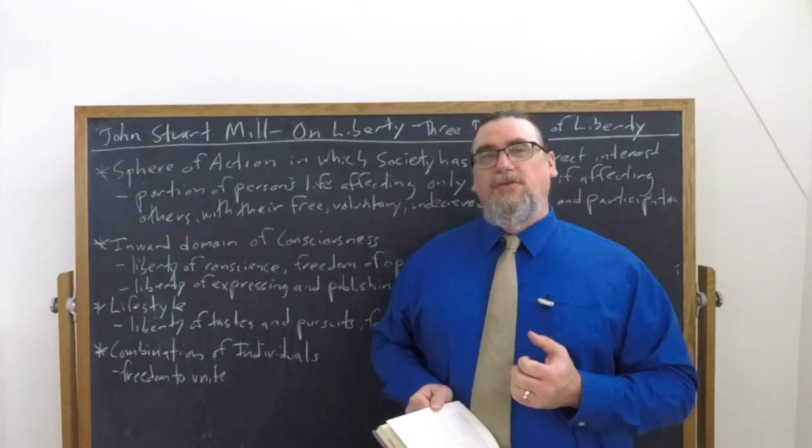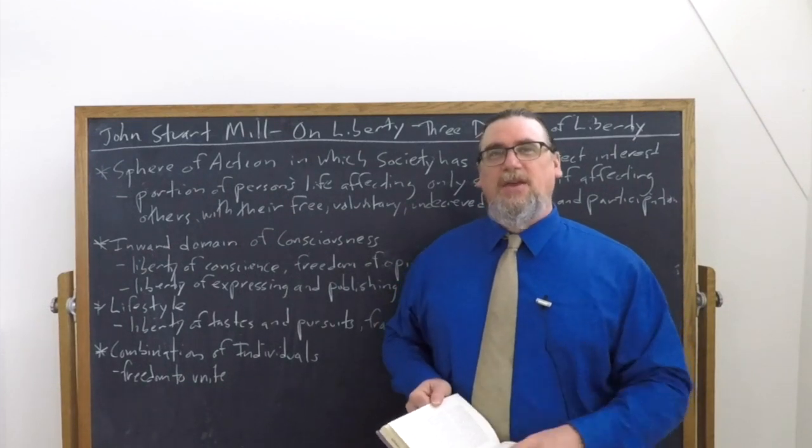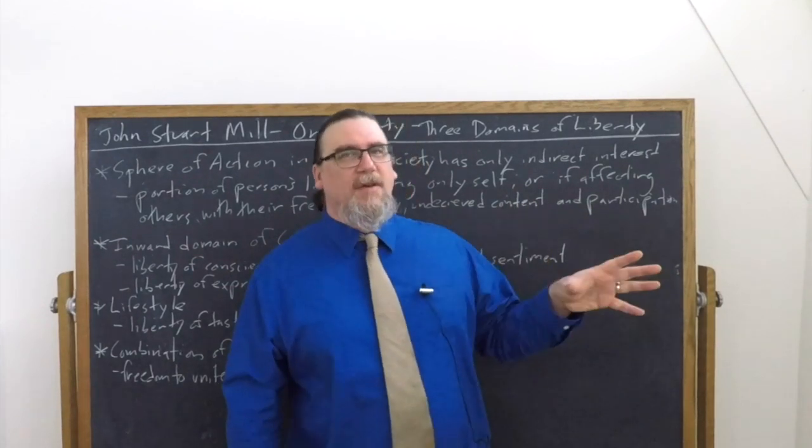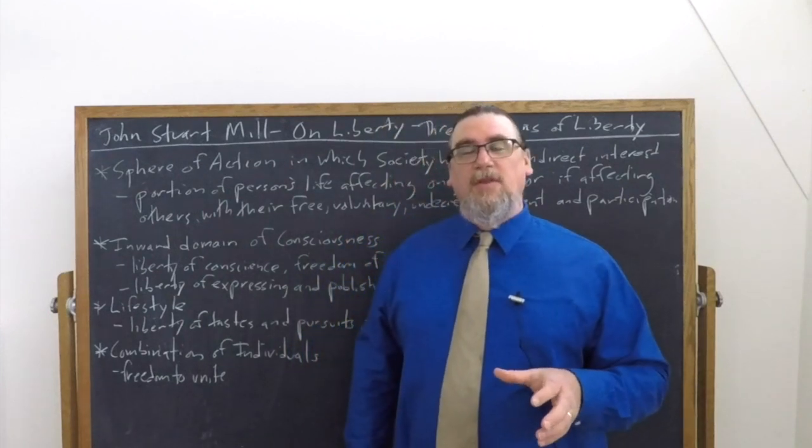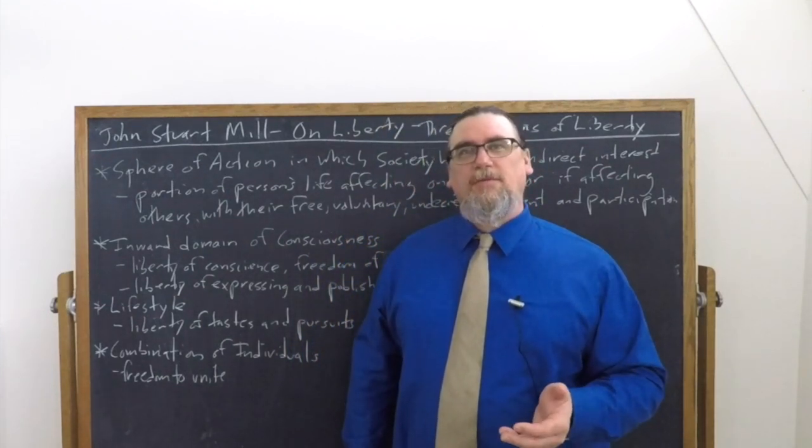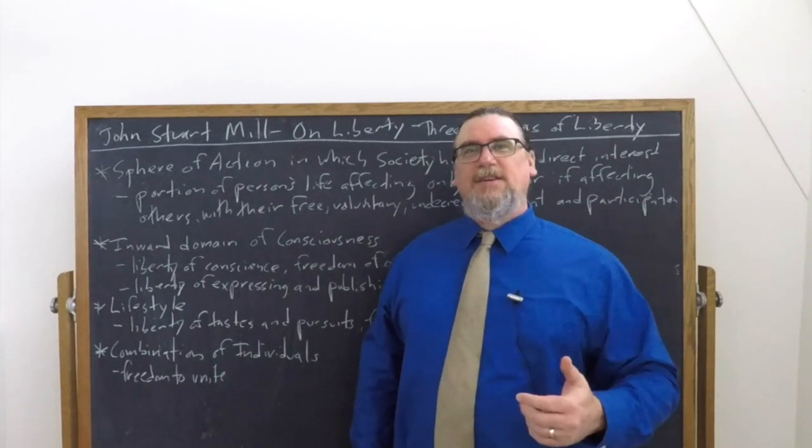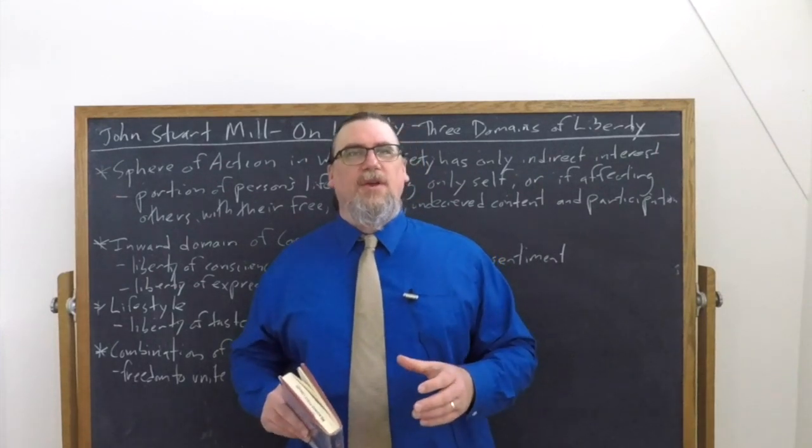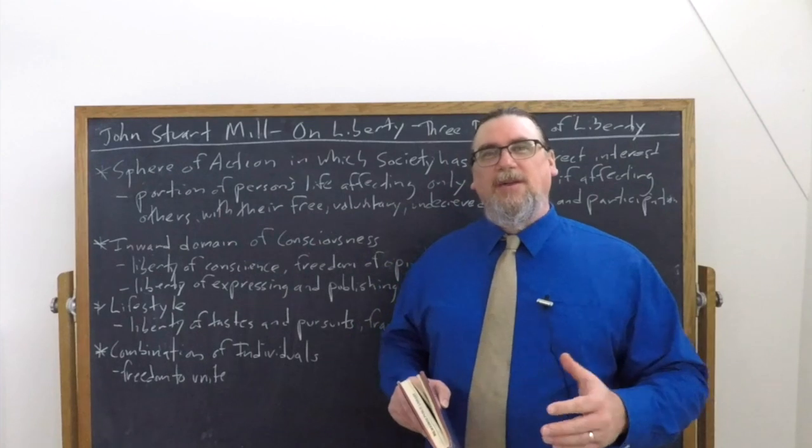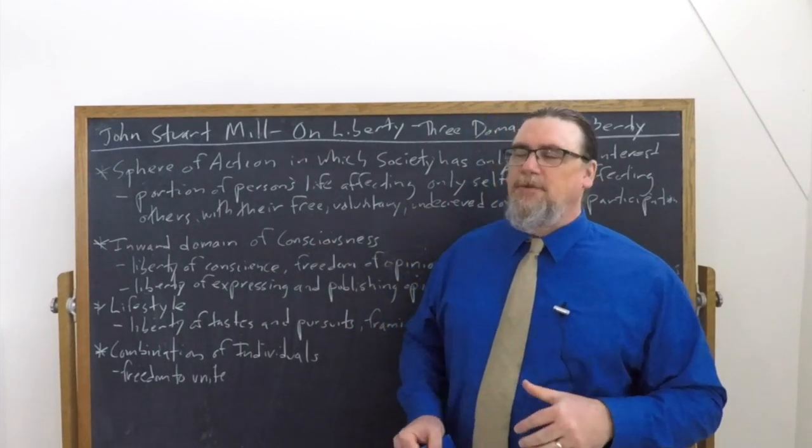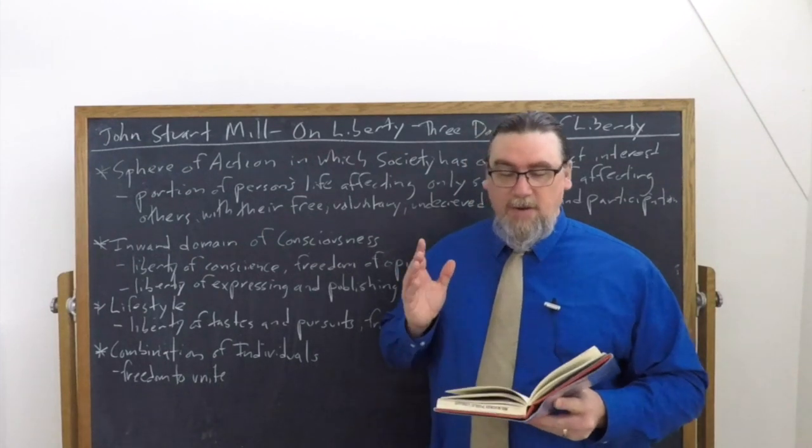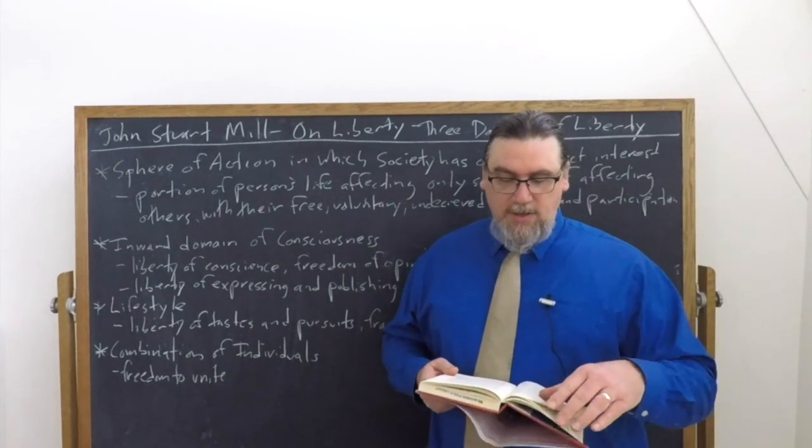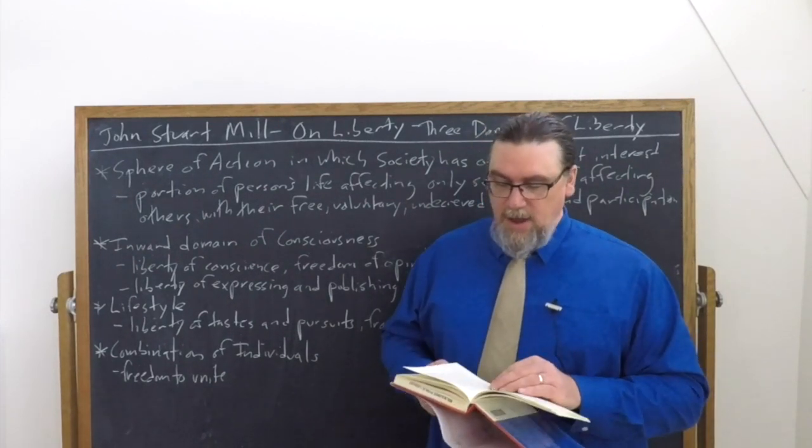John Stuart Mill begins his work On Liberty by specifying that he's not going to be discussing the liberty or freedom of the will, which is a metaphysical doctrine, but rather something that falls within the domain of social and political philosophy: civil or social liberty, the liberty or freedom of an individual within a society to do certain things. A little ways in, he's going to clarify what he means by talking about the different types and areas of liberty.